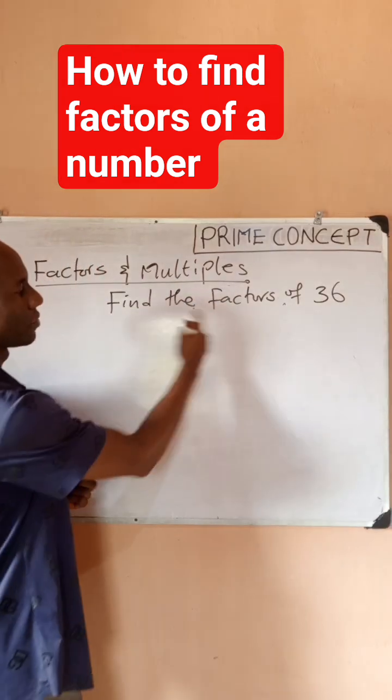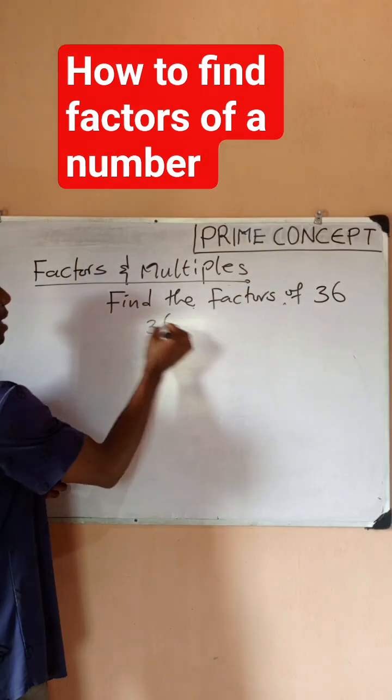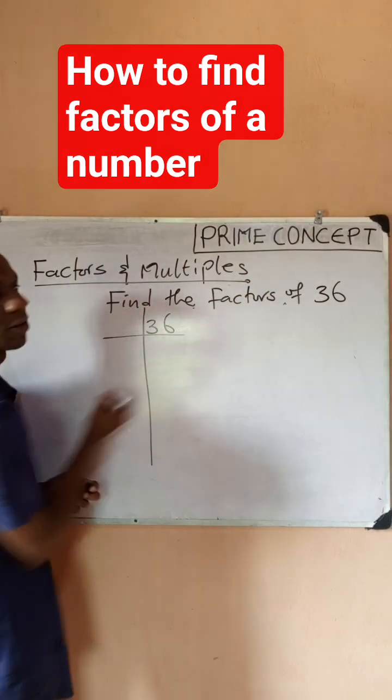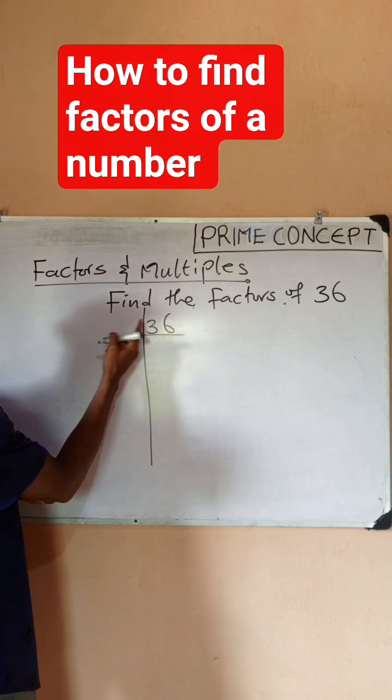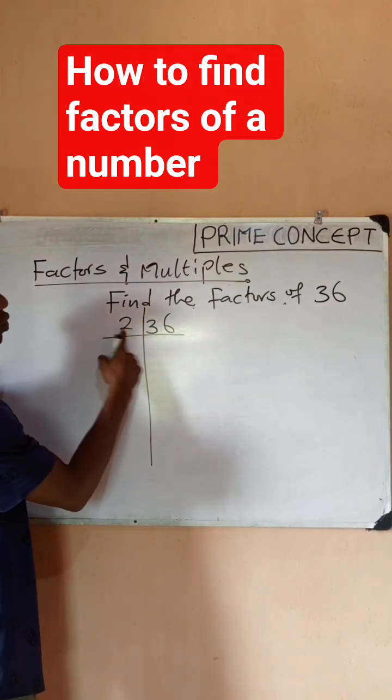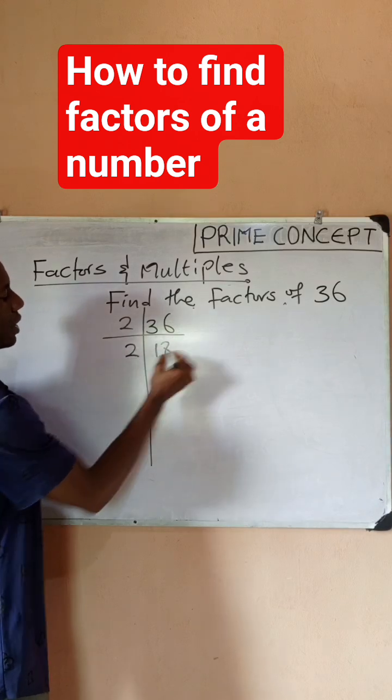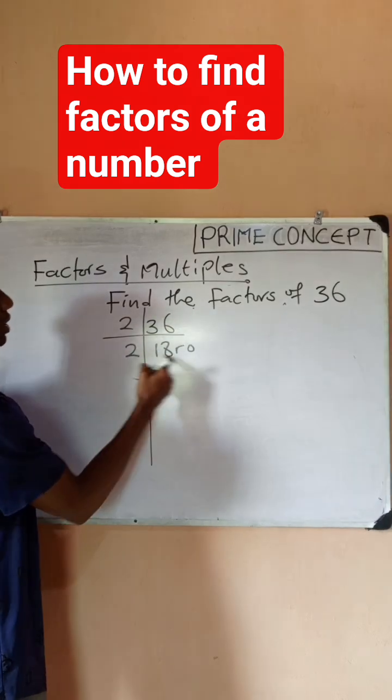So let's look at how we can find the factors of 36 very quickly. I'll use prime division. I'll start with the smallest prime number, which is 2. Let's see if it can go: 2 in 36 gives us 18. 2 in 18, of course there's no remainder, gives us 9.